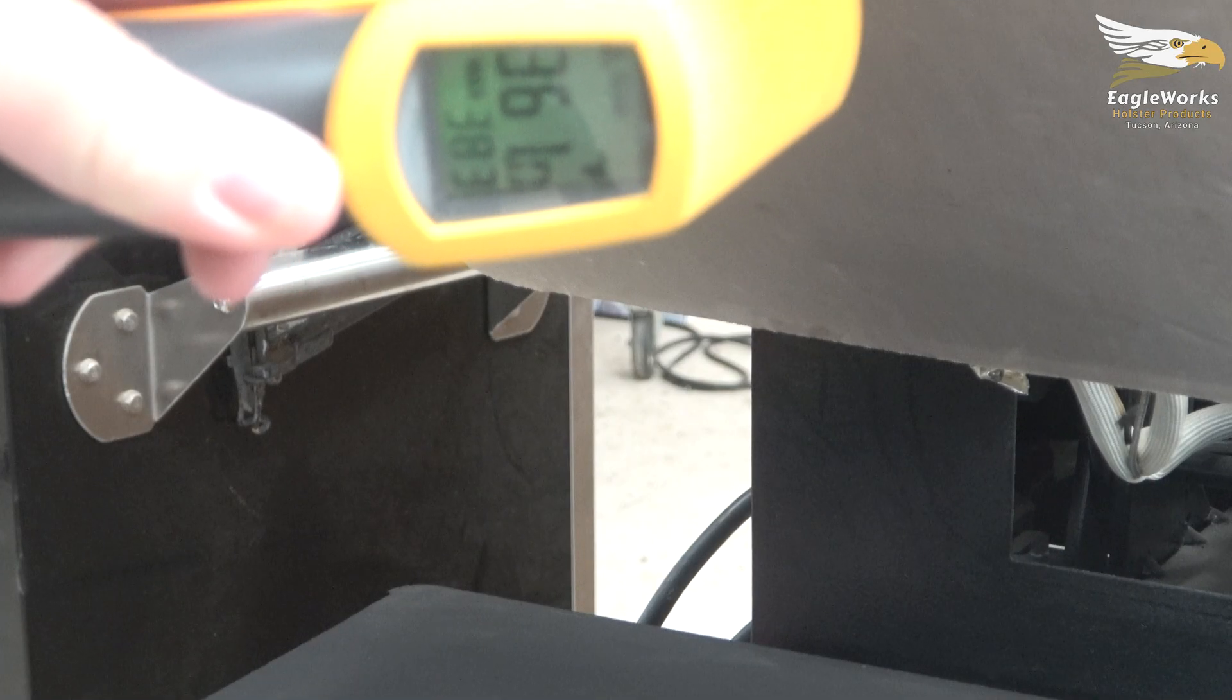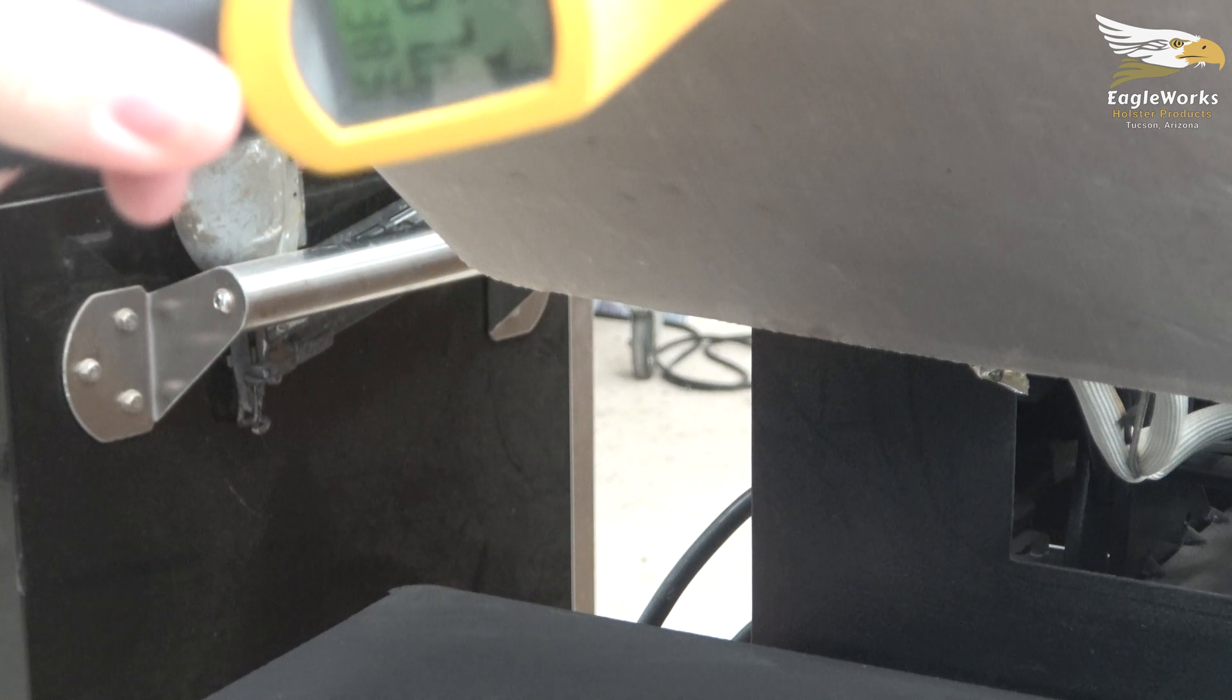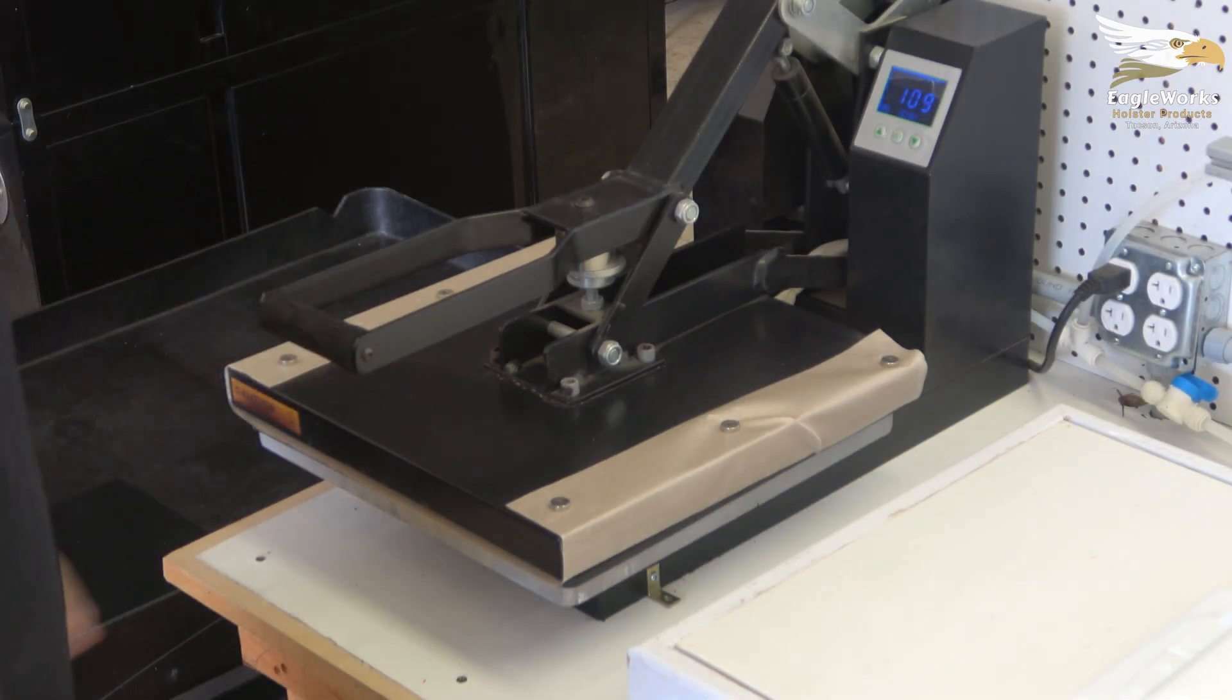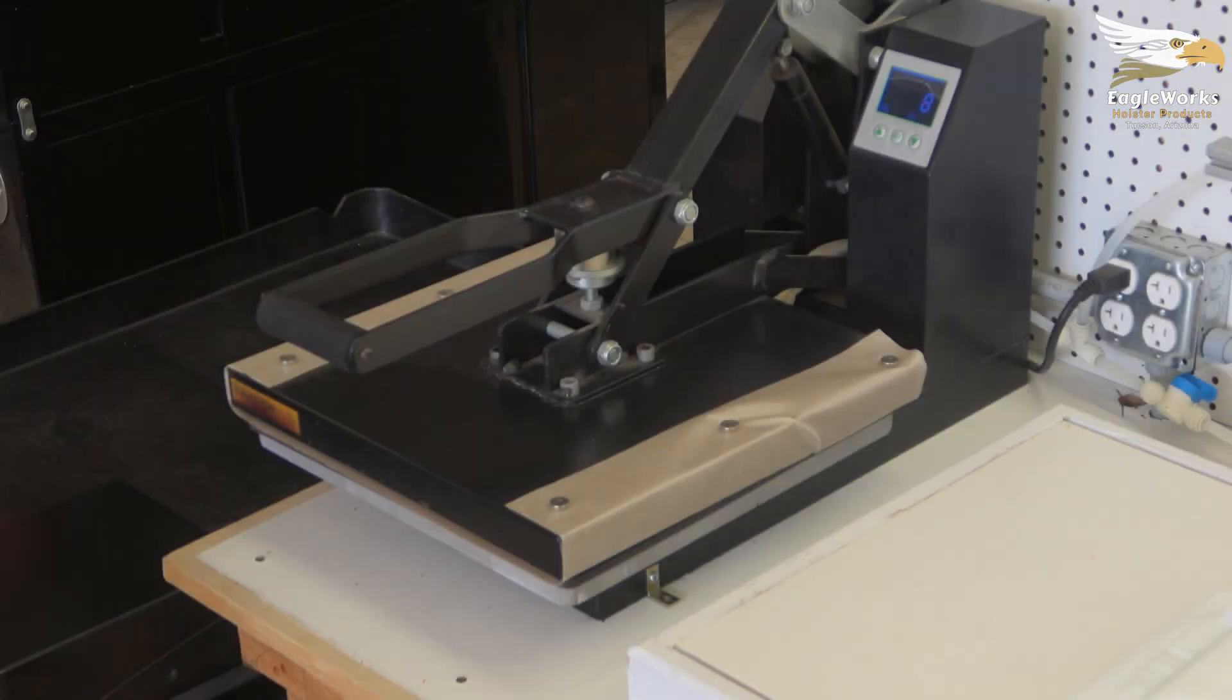Once your press is hot, you'll also want to preheat the bottom rubber for more consistent results. Close the empty press and let it run through a couple of heat cycles. You'll get much better consistency throughout your production run when you start with the bottom pad preheated.